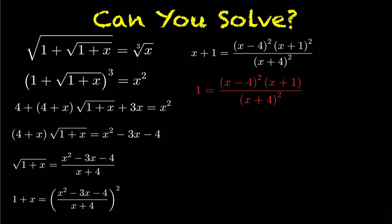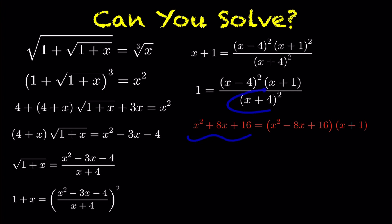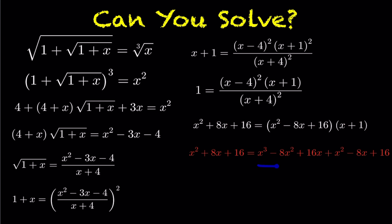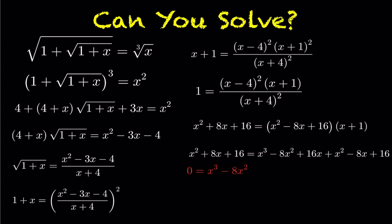Now we bring everything to the top by multiplying across by (x+4) squared. Expanding (x+4) squared — squaring the first, first times second times two, and squaring the last — we then expand out the right hand side and bring everything to one side.